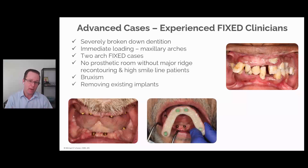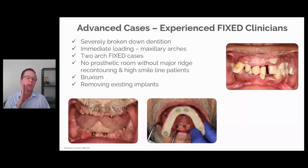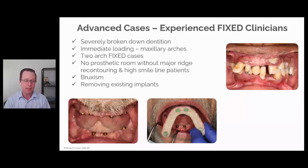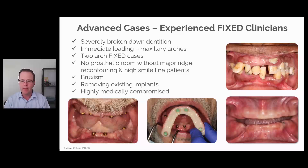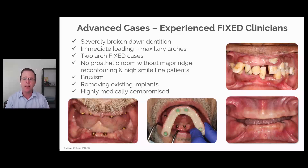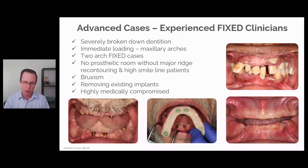Bruxism — if the patient has a fair amount of bruxism, Locator Fixed does work with bruxing patients, but we do want to limit their AP spread. For a non-bruxer, you can go one-to-one AP spread, meaning you can hang more teeth off the back. With bruxing patients, you'll have to hold back on your AP spread, typically 0.5. Also, if the patient has existing implants in place and is highly medically compromised, a lot of times they also have limited finances. These tend to be advanced cases or older populations — definitely treatable with Locator Fixed, but make sure you seek out additional resources and take additional education training programs.